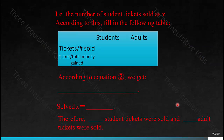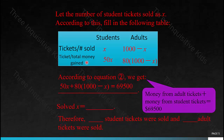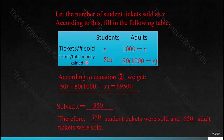Here would be the solution. Let's first set the number of student tickets sold as X. There are X student tickets sold and 1,000 minus X adult tickets sold. The total money gained from student tickets would be 50X, and from the adults it would be 80 times (1,000 minus X). According to equation number 2, we have 50X plus 80(1,000 minus X) equals 69,500. Solved, X equals 350. Therefore, 350 student tickets were sold and 650 adult tickets were sold.